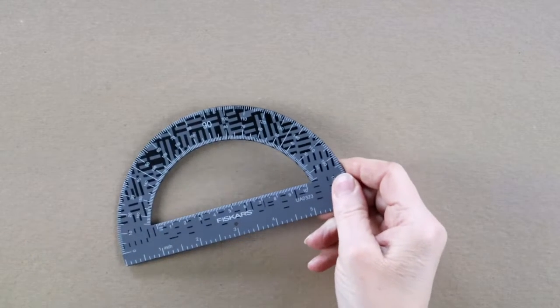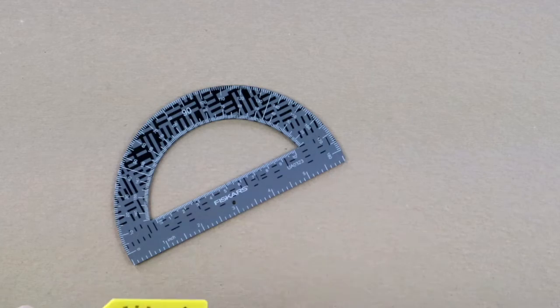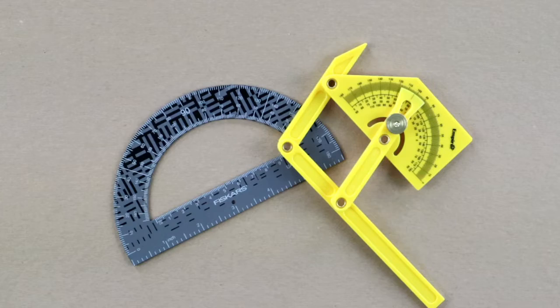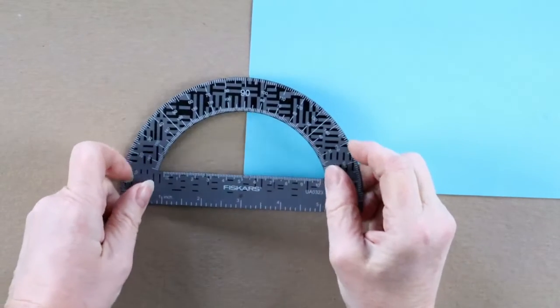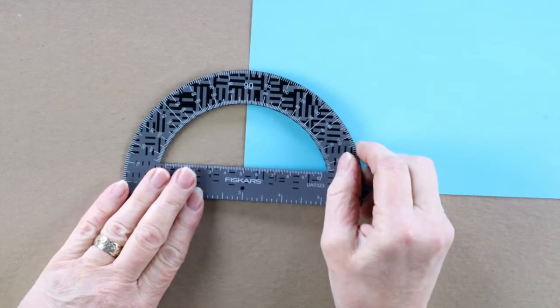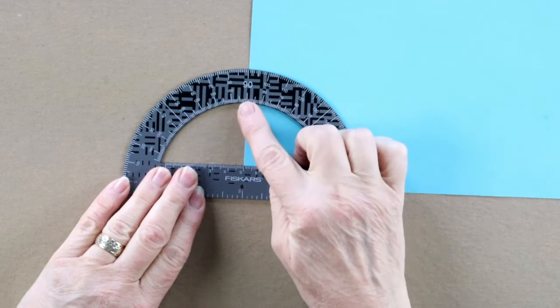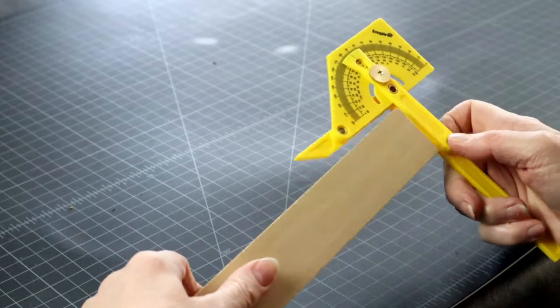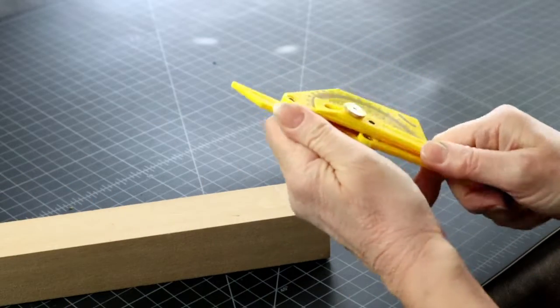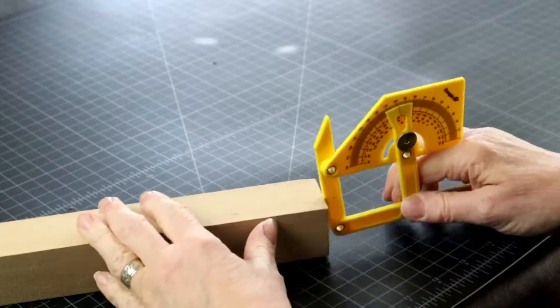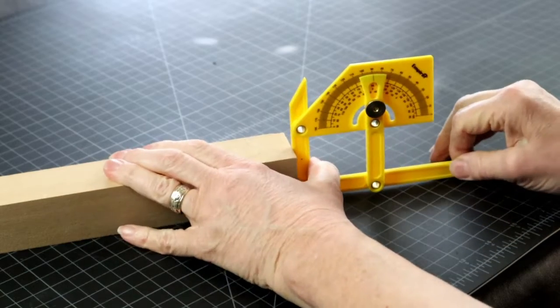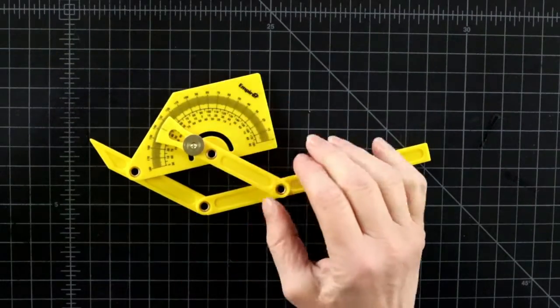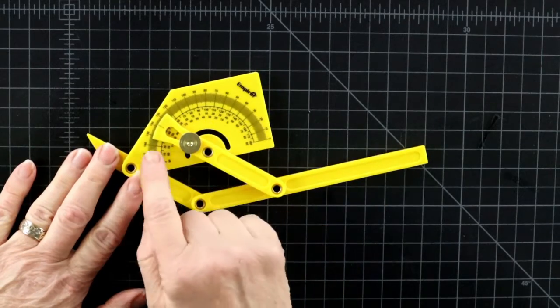There are all kinds of protractors and angle finders on the market. Check the tools and materials section in the description, should you need one. Protractors are more useful on the flat plane in pattern making. Angle finders are more helpful in 3D situations. What I like about this one is that it measures easily both the external and the internal angles, and you can also lock it at a specific angle.